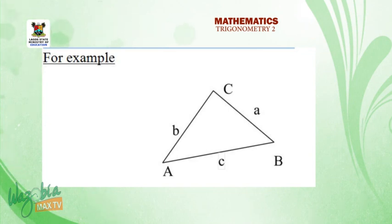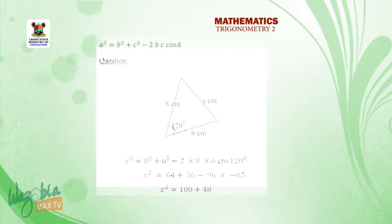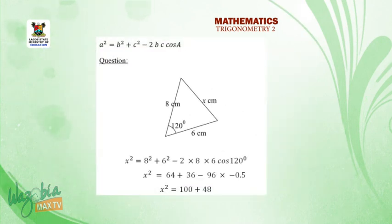Here now, we have assumed that the given angle is A. So the side opposite to angle A is small a. So the formula, how does the formula now go? The formula is now the a we want to look for, that side that is opposite to the given angle. That would be a squared equals to b squared plus c squared minus 2bc cos A. So that is the statement.